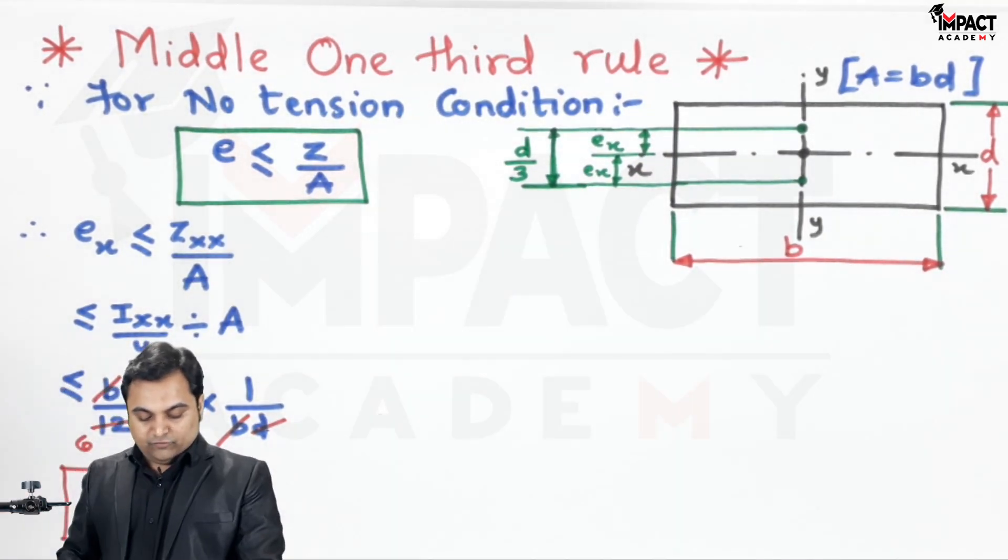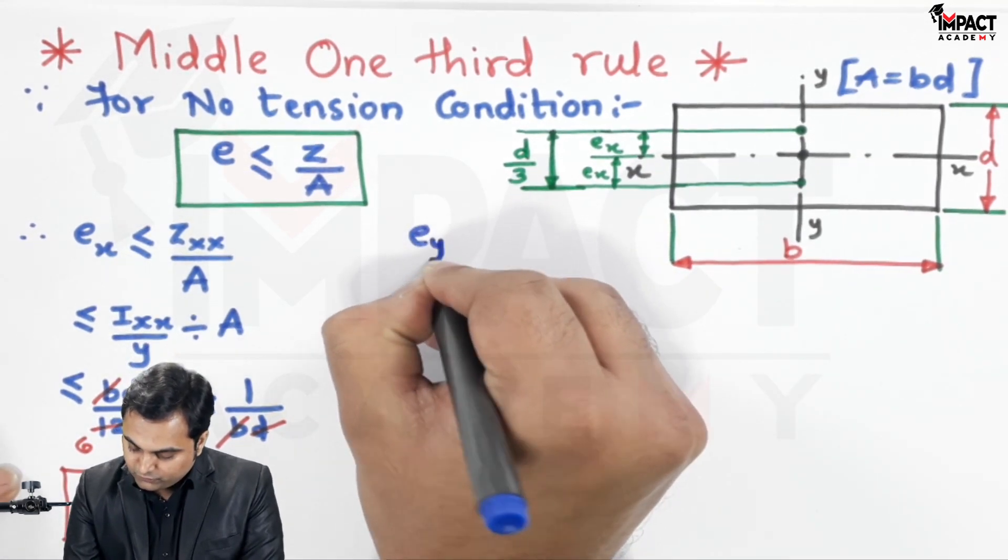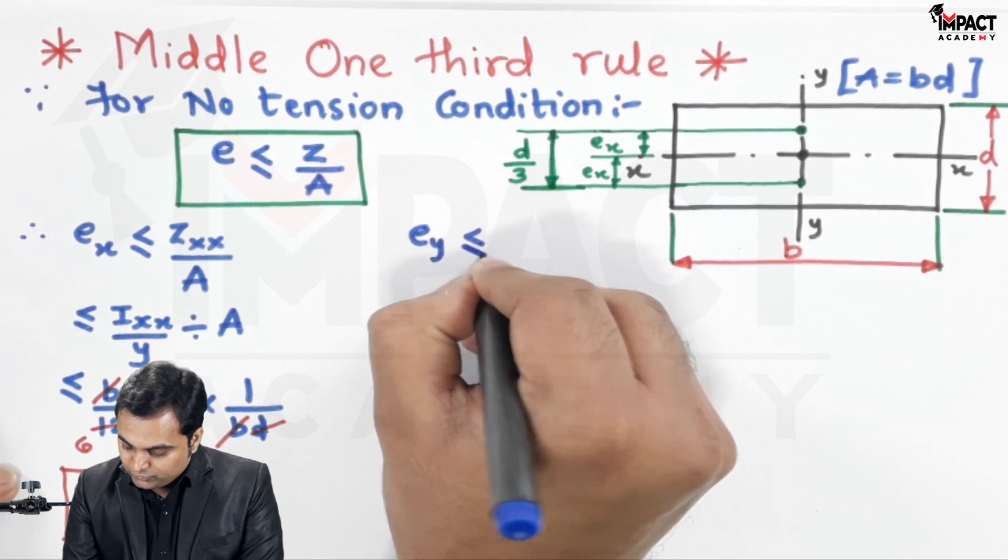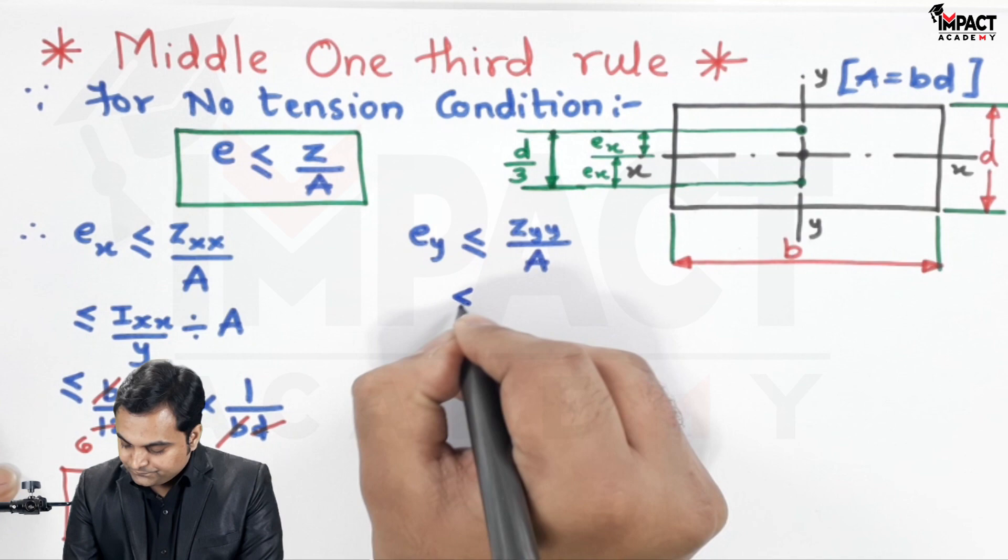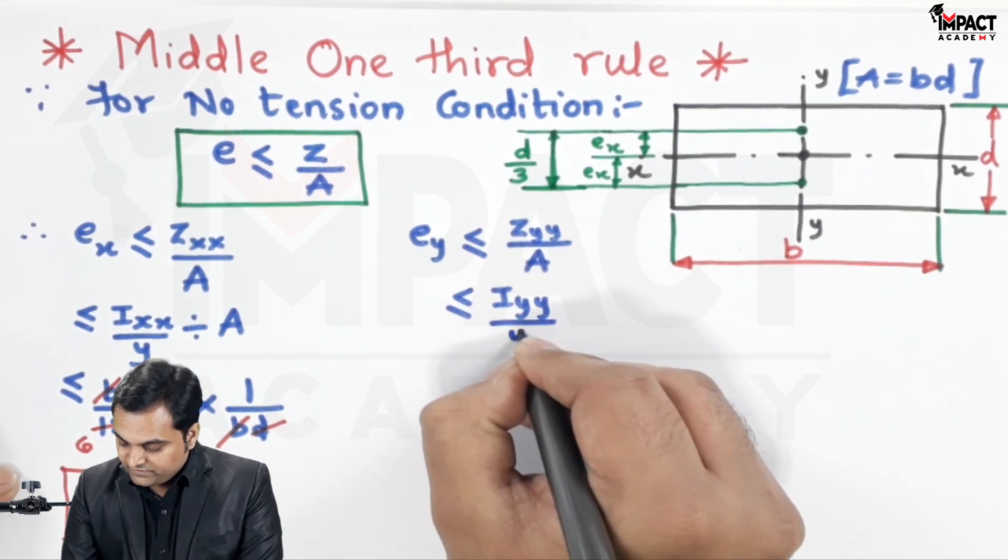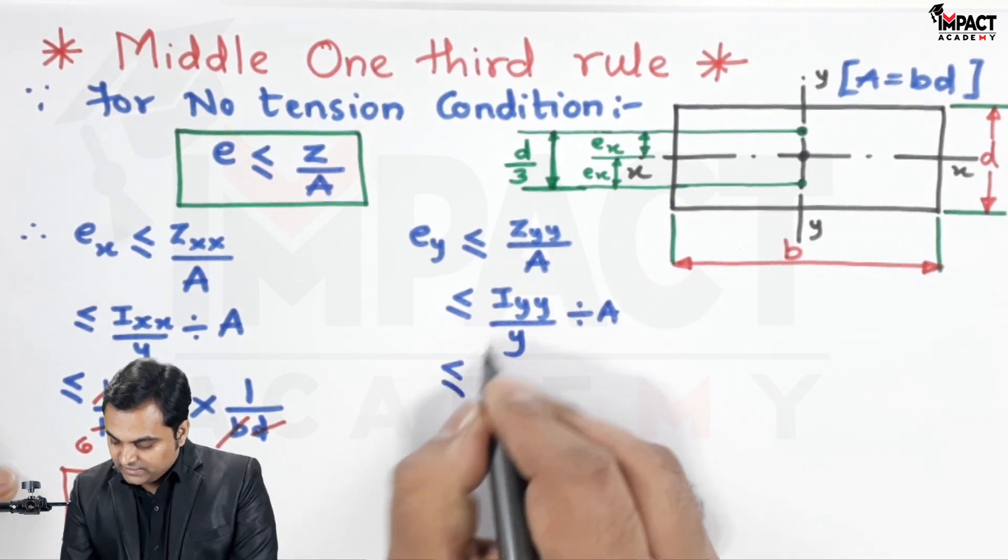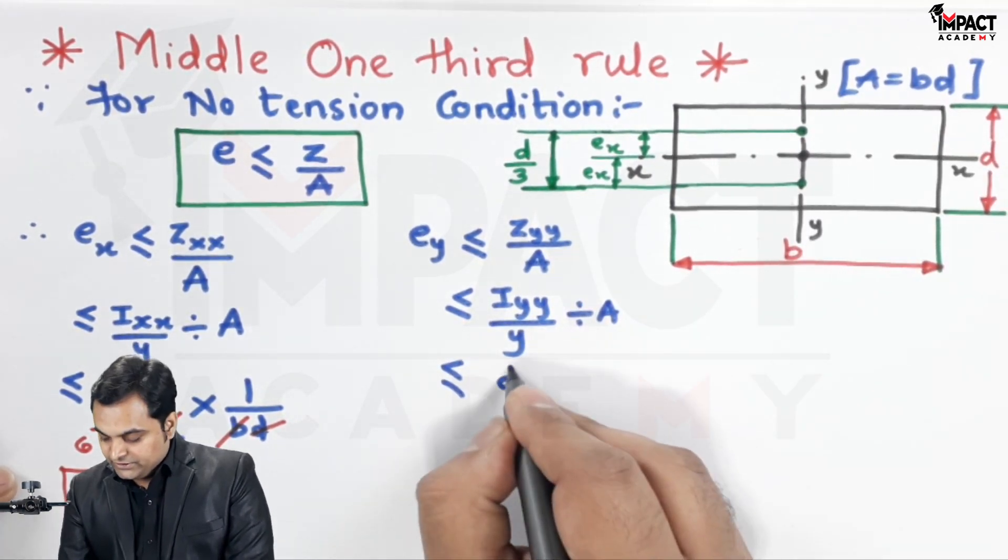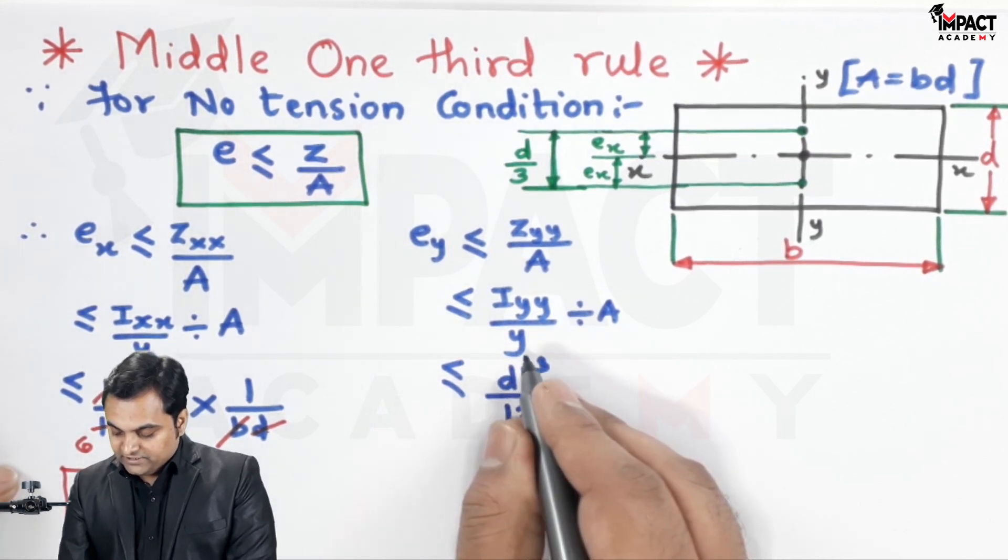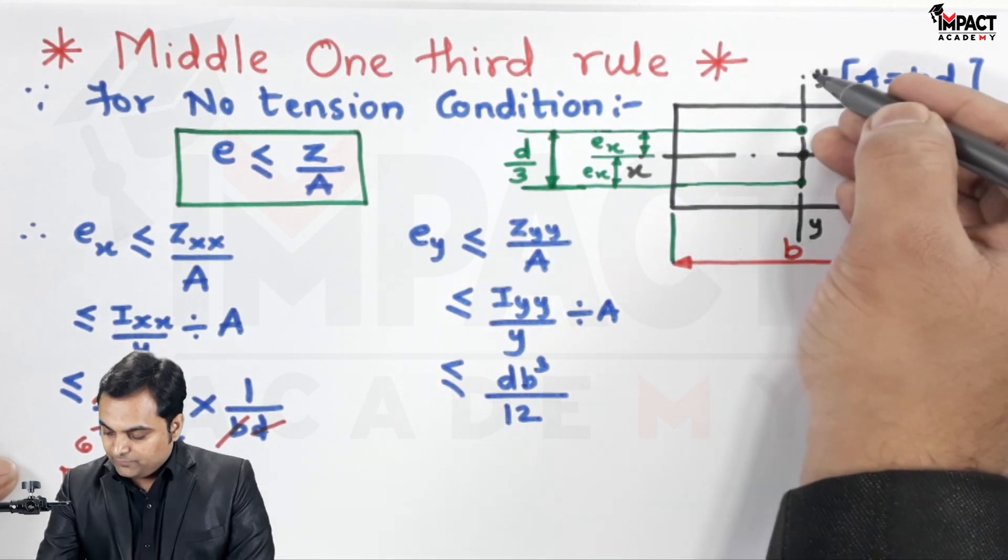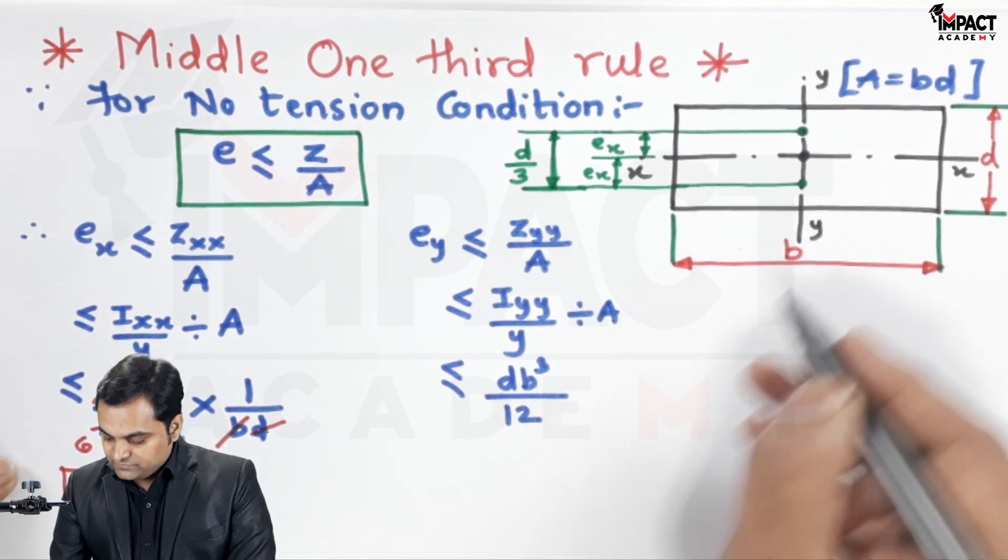Similarly, I'll find the eccentricity with respect to y-axis. ey, using the no tension condition, would be zyy/area. zyy is iyy/y divided by area. For a rectangular section, iyy is db³/12 divided by y. Since we're taking moment of inertia about the y-axis, it cuts b, so y becomes b/2.